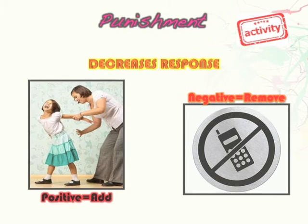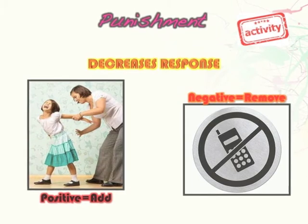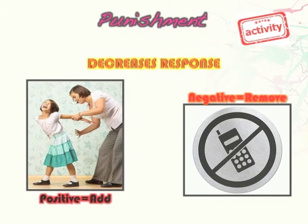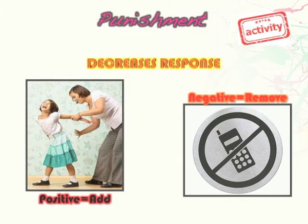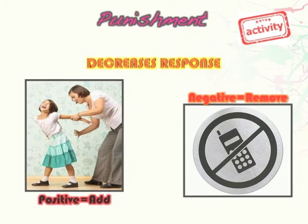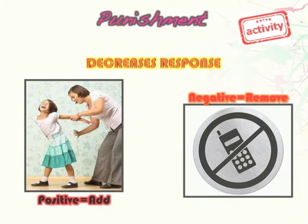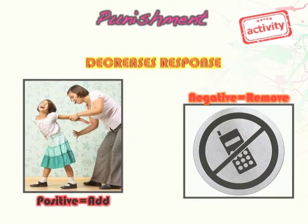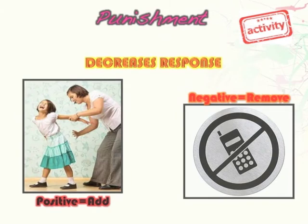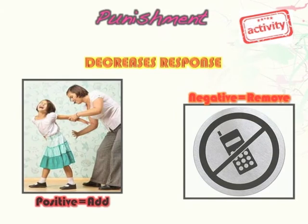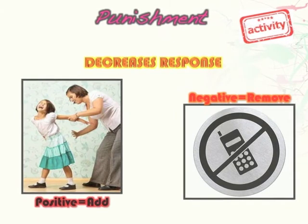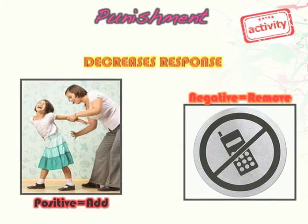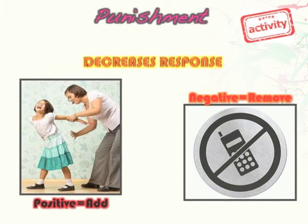The next term is punishment. Unlike a reinforcer, punishment is never a good thing — put a frowny face next to it in your notes. No matter what word comes before 'punishment,' it's never desirable, and it always decreases a response — it stops a person from doing a behavior. Remember: positive and negative still refer to mathematical terms here, so positive means to add and negative means to remove.